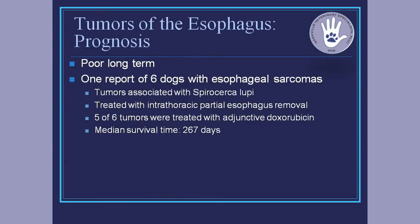There is a study published looking at esophageal sarcomas — this had six dogs, all with sarcomas linked to Spirocerca lupi as the cause. They were treated with intrathoracic partial esophageal resection, and the dogs did really well. Five of the dogs received adjunctive doxorubicin after surgery, and the median survival time was 267 days. It's not uncommon for any of these guys to exceed a year going in and removing the tumor. So getting a diagnosis — which can be done with endoscopy — is important: if it's a sarcoma, that's a tumor type that may benefit greatly from surgical removal.